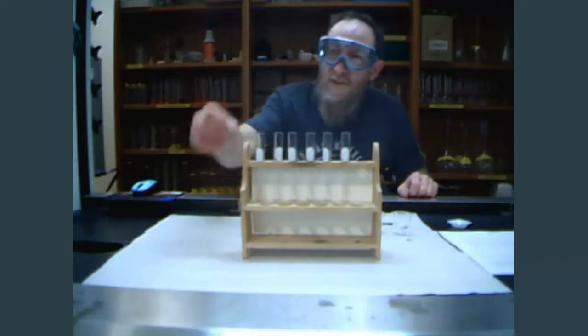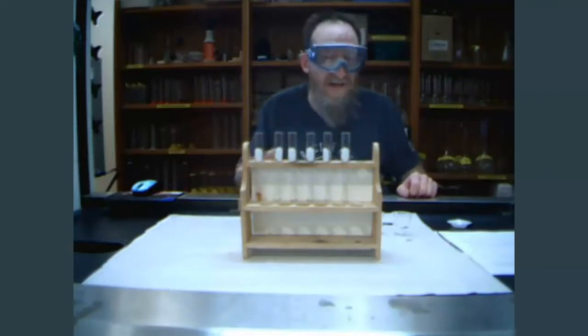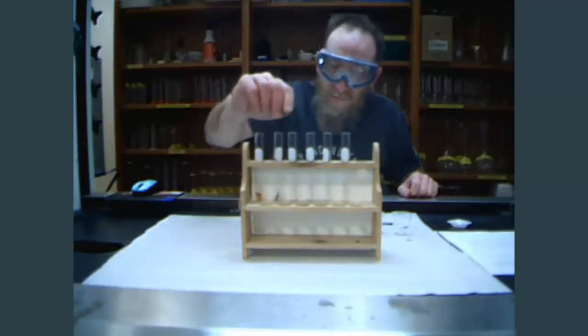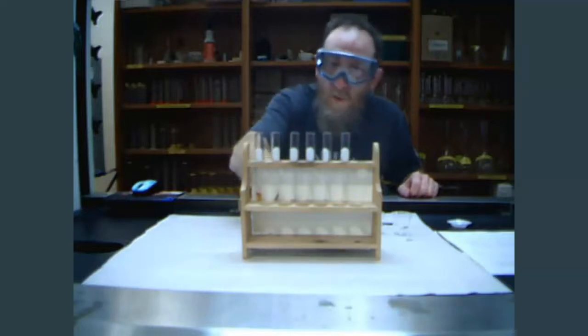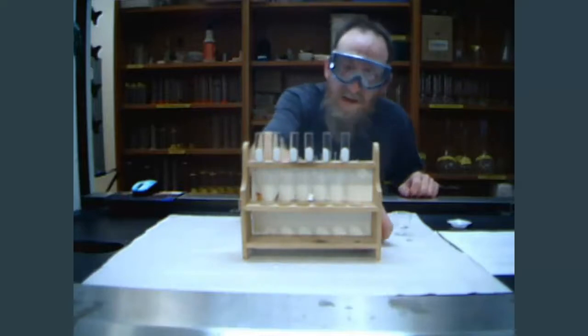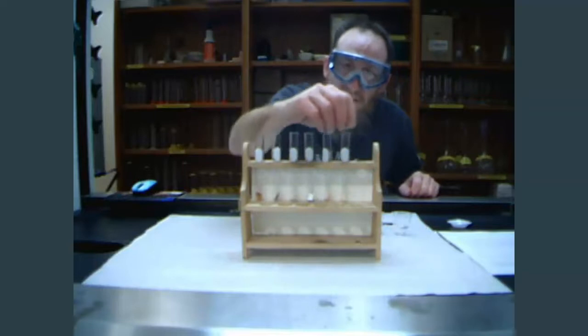In test tube number one, I'm going to put a little piece of copper. Again, I've already sanded these so they're nice and shiny. In the second test tube, I have some lead. In the third test tube, a piece of zinc. In the fourth one, also a piece of zinc. And then in the fifth test tube, a piece of copper. And in the last one, again, zinc.